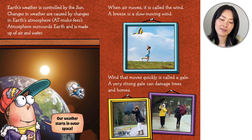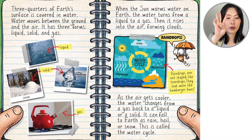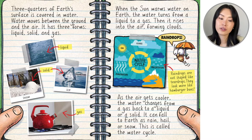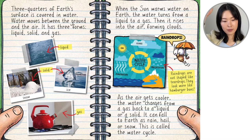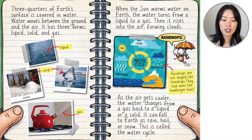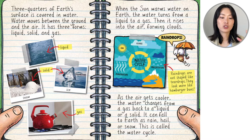Buzz says our weather starts in outer space. Now, three quarters — that means three out of four — of Earth's surface is covered in water. Water moves between the ground and the air. It has three forms: liquid, solid, and gas. When water's on the ground, it might be liquid water. It might be solid water like snow and ice.